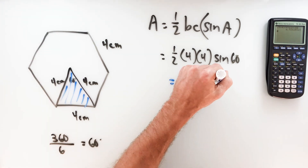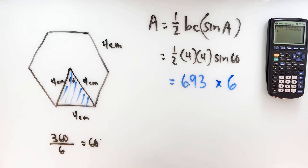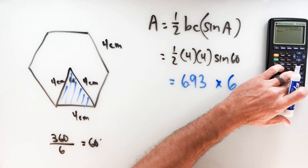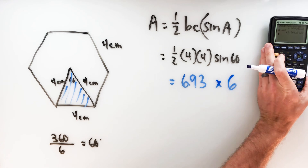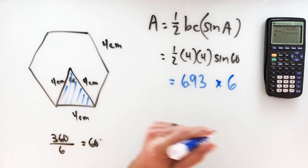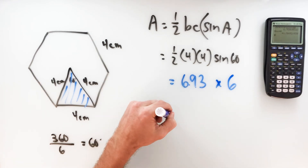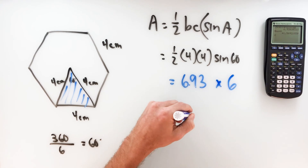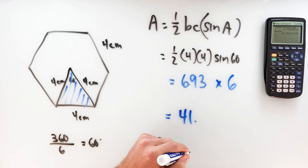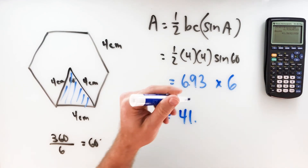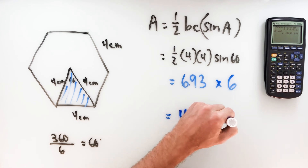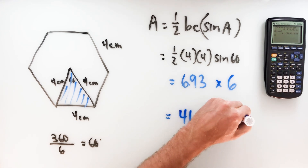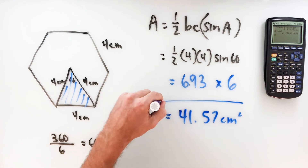In a regular hexagon you've got six of those triangles. So we're going to multiply that area times six, which gives us a total area of 41.57 square centimeters.